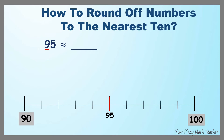They have the same distances, but once the number reaches the middle, it has to be rounded off to the greater number. Therefore, 95 is rounded off to 100.